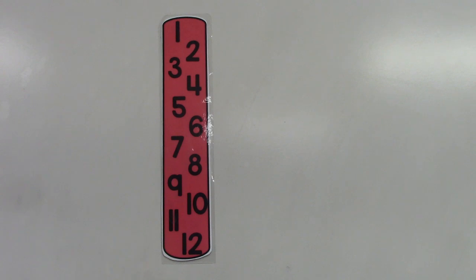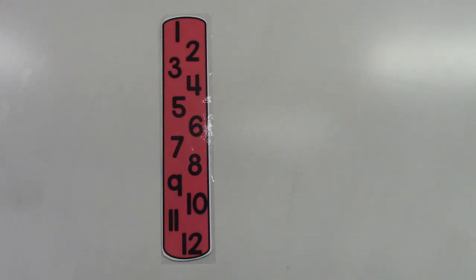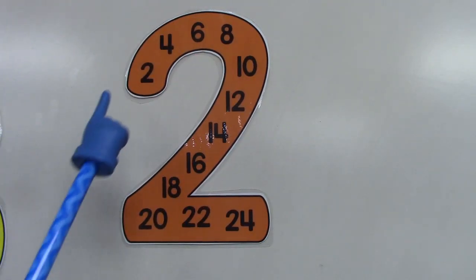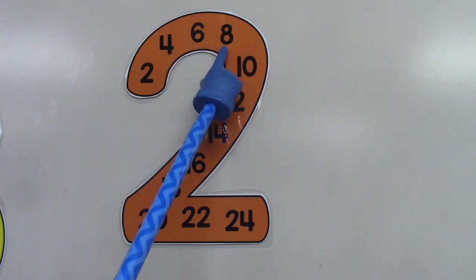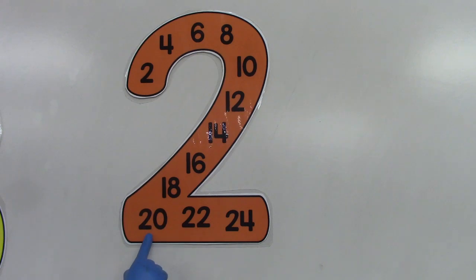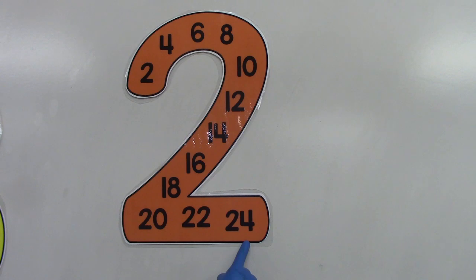Often when we count we count by one, like on this card where it has 1, 2, 3, 4, 5, 6, 7, 8, 9, 10, 11, 12. But sometimes we skip count, and today we're going to practice skip counting. Let's practice skip counting by two: 2, 4, 6, 8, 10, 12, 14, 16, 18, 20, 22, and 24. Do you want to sing some more?